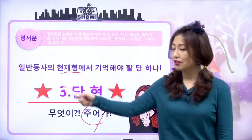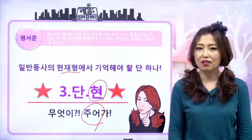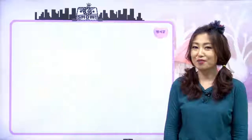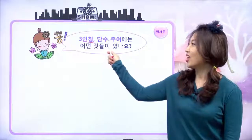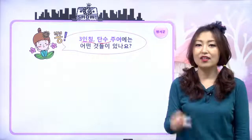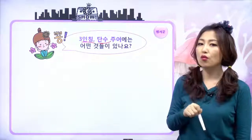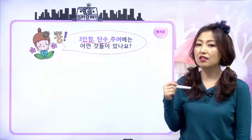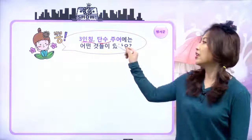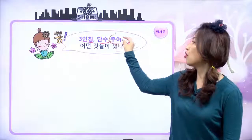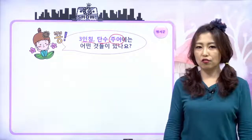그래서 어떻게 변하는지 살펴보면, 첫 번째 3인칭 단수 주어들을 먼저 우리가 알아봐야 해요. 인칭 대명사에 3인칭 단수. 우리 친구들 선생님하고 명사편 공부할 때 1인칭, 2인칭, 3인칭 있었어요. 1인칭은 나, I, 그리고 we였고 단수, 복수 다 해서 2인칭은 you였어요. 3인칭은 나도 너도 아닌 그들 제3자들이었잖아요.